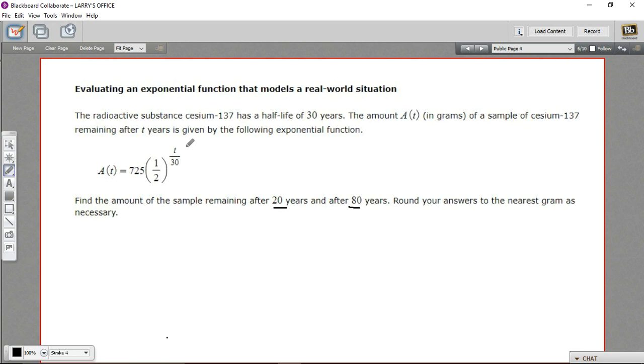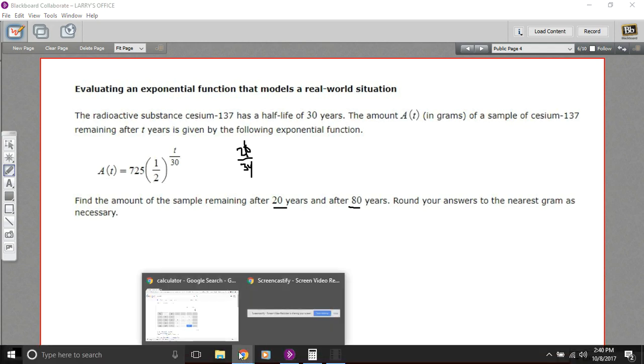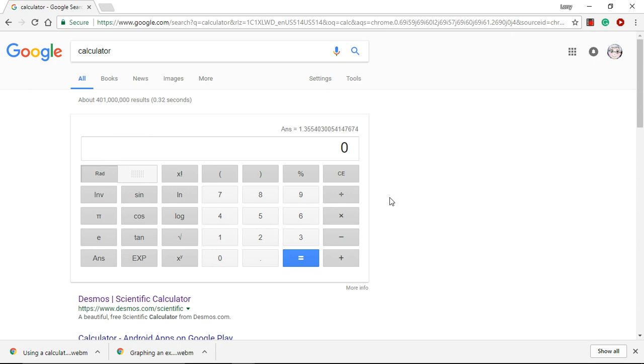First of all, let's plug in 20 years here. If I plug in 20 for t, my power is 20 over 30, or really just two-thirds. So we're raising this to the two-thirds power. I want one-half to the two-thirds power, and then I want to multiply it by 725. So let's see how well we can do that on the Google calculator here.